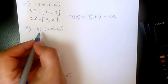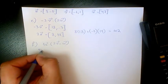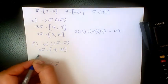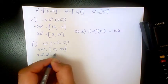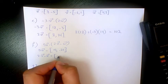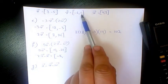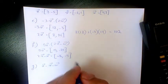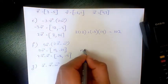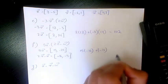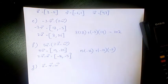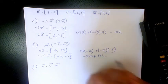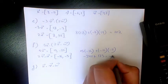Next, 5u dot (2v minus w). 5u = (15, -25). 2v minus w = (2 times -6 minus 4, 2 times 1 minus 7) = (-16, -5). Dot product: 15 times -16 plus -25 times -5 = -240 plus 125 = -115.